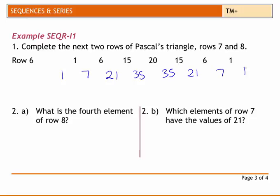From there, 7 plus 1 is 8, 7 plus 21 is 28, 21 plus 35 is 56. We have 70 and then we start repeating in the opposite order.